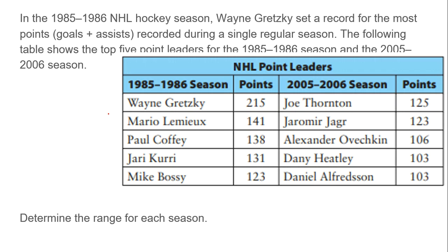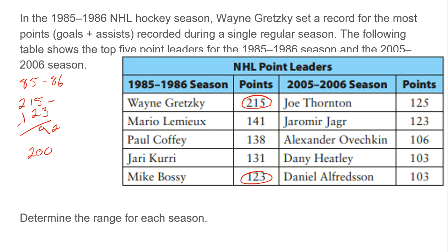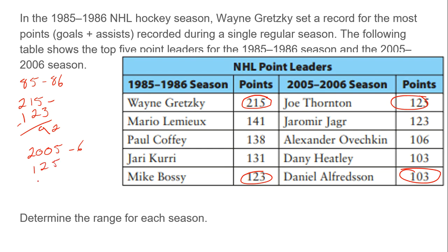Determine the range for each season. For the 1985–86 season, the highest value is 215 and the lowest is 123. So 215 minus 123 gives us 92 points. For the 2005–06 season, the highest is 125 and the lowest is 103, giving us 125 minus 103 equals 22 points.